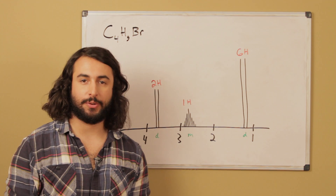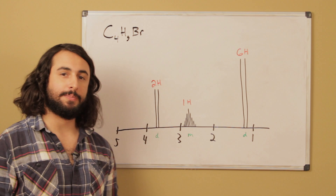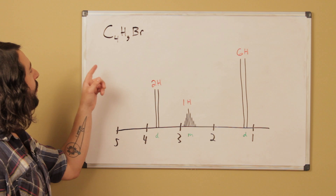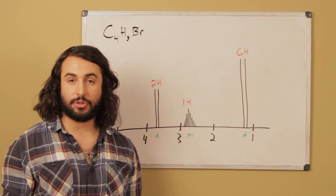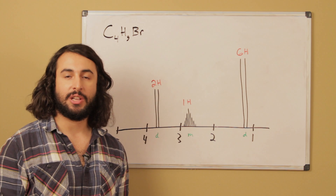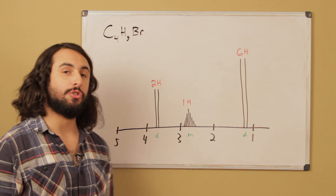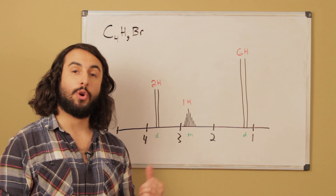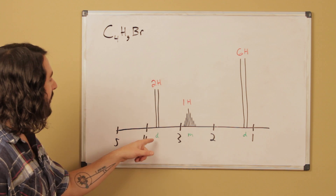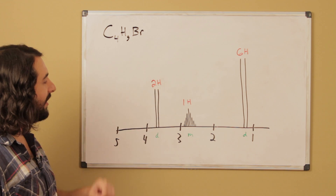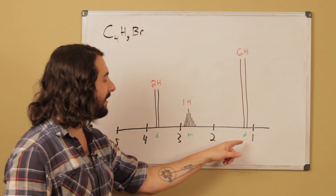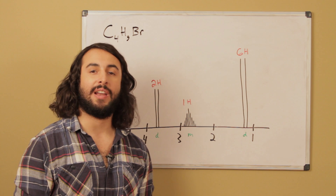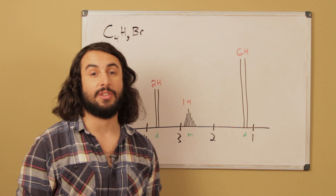Today's problem we're going to be looking at NMR spectroscopy. This is an NMR spectrum that corresponds to a compound with the empirical formula C4H9Br. We know that there are different structural isomers that can correspond to C4H9Br, so we're going to want to figure out exactly the structure of the compound that corresponds to this NMR spectrum, which has a doublet here that integrates to 2, a multiplet here that integrates to 1, and a doublet here that integrates to 6. If this seems confusing, go ahead and watch my tutorial on NMR spectroscopy first.